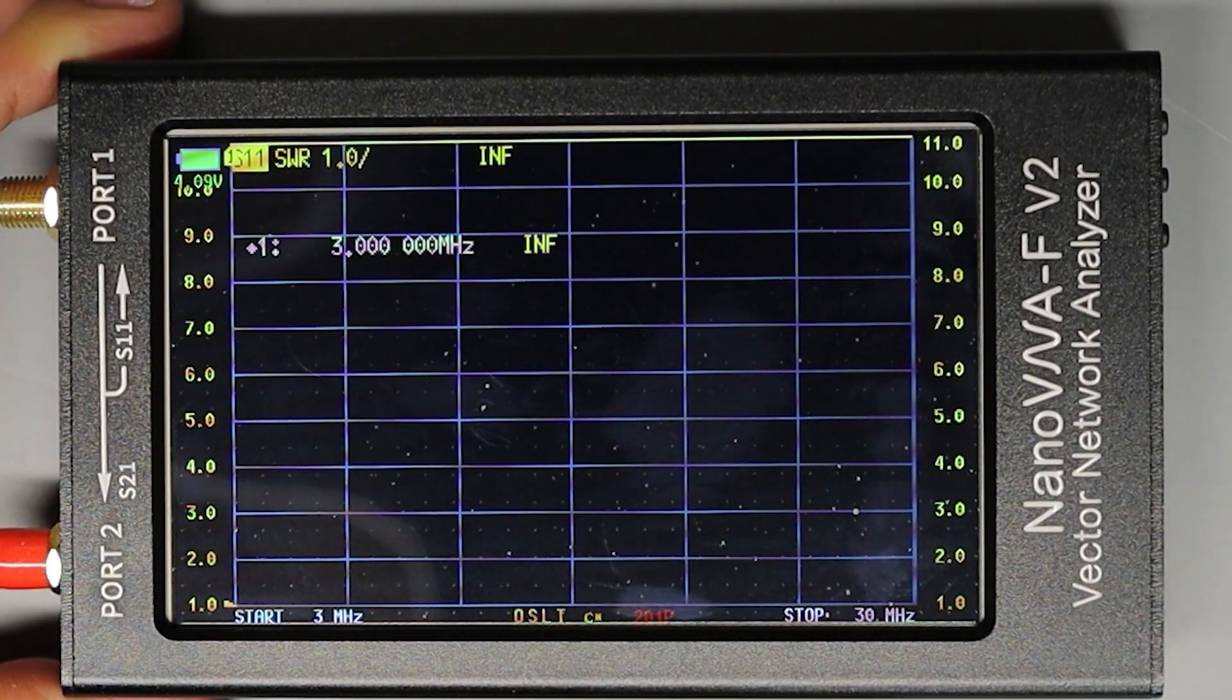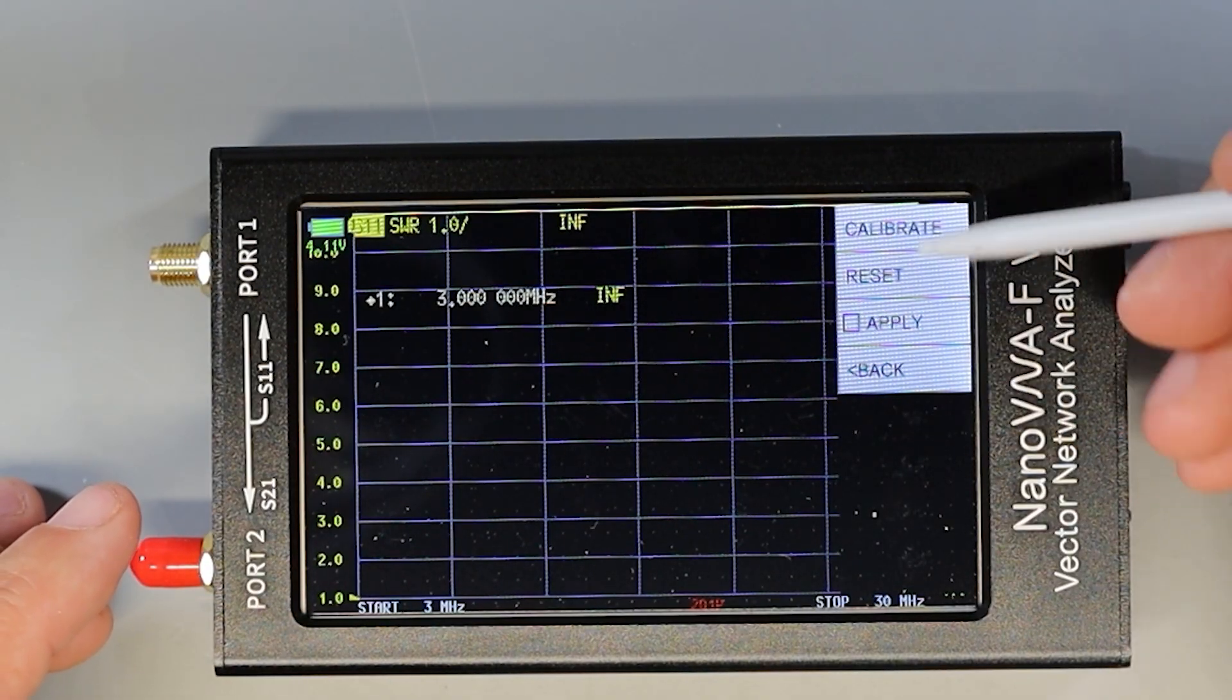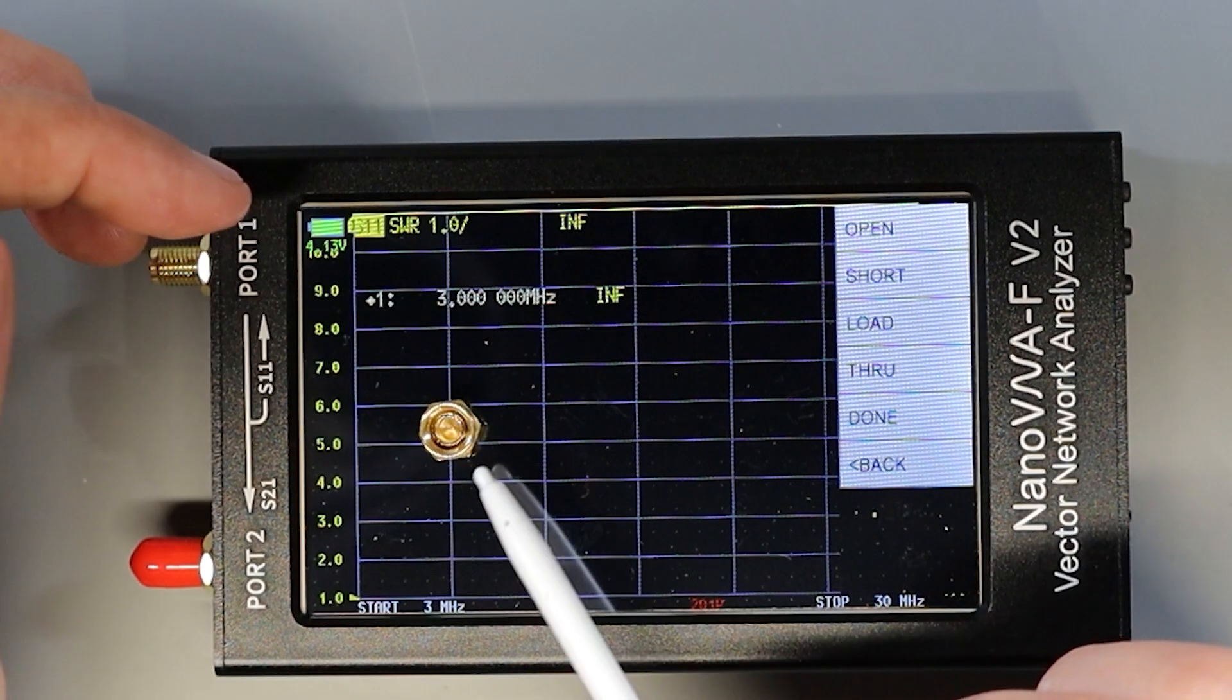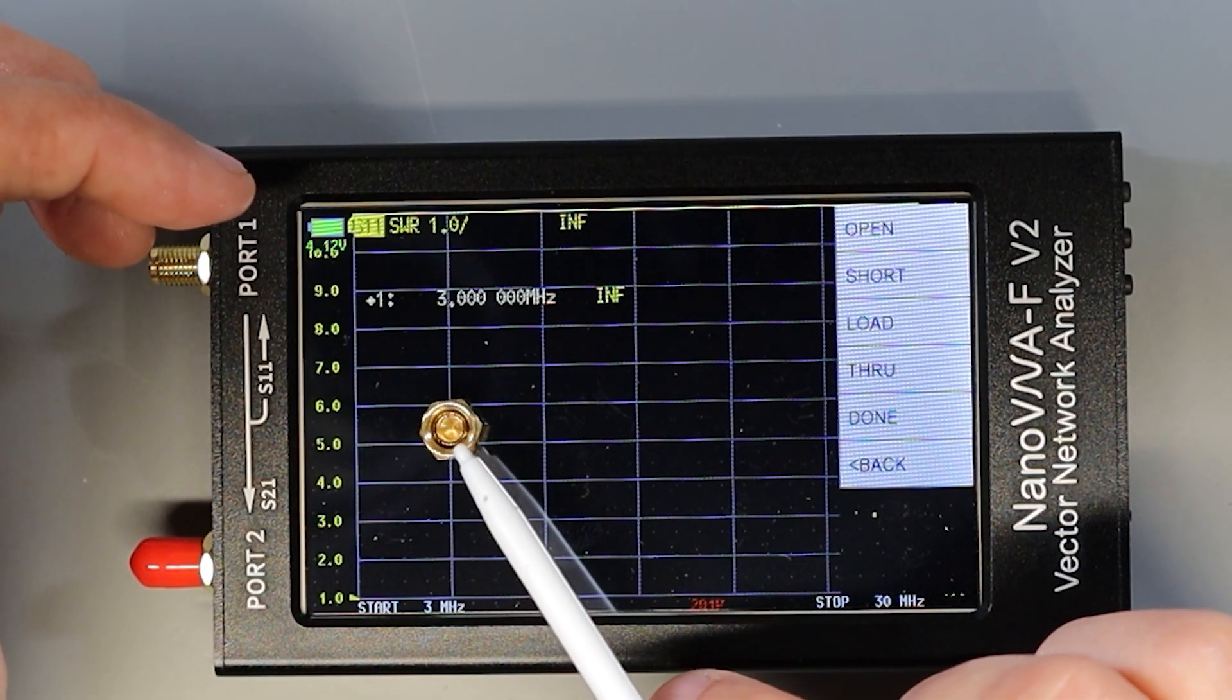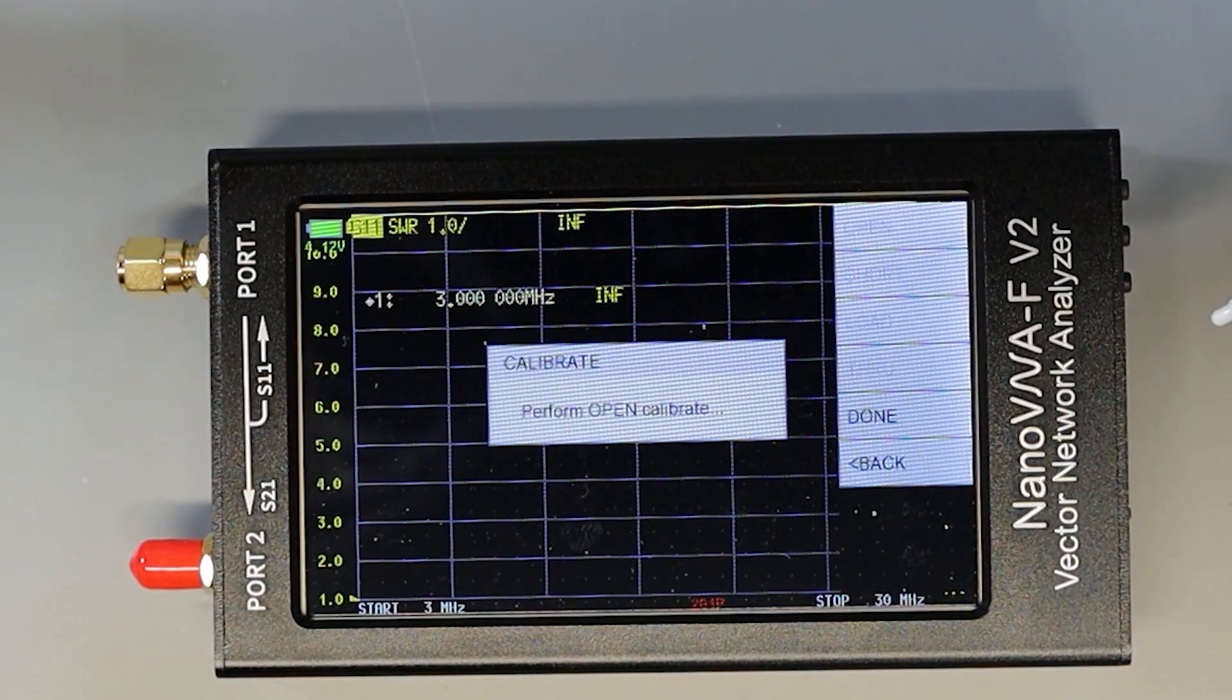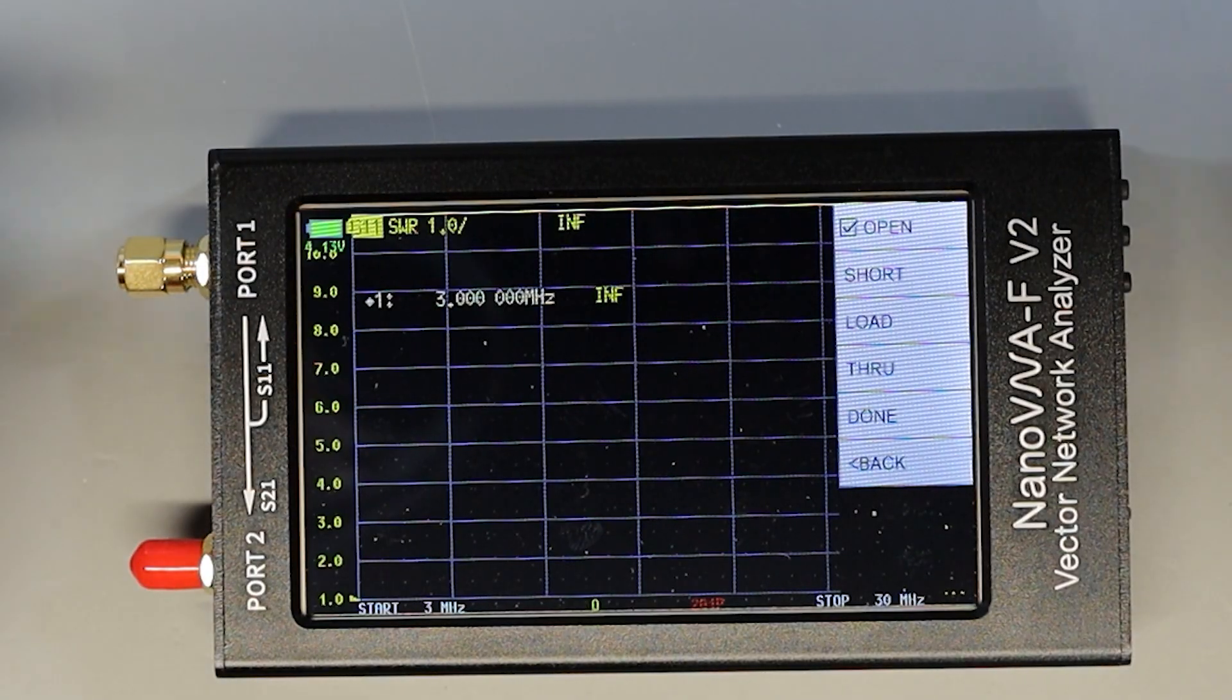The next thing I'm going to want to do is calibrate the NanoVNA. To calibrate we're going to click on cal and then we're going to click on calibrate on the next level menu. Now you can see we've got four calibration steps to go through: open, short, load, and through. I'm going to start off and grab the open slug from the kit and this is the one that has just a depression in it and I'm going to connect this up to port 1. Now that that's connected up I can just click open. You can see that it's performing the open calibration. When it's done you'll see a check mark next to it to let you know that it's complete.